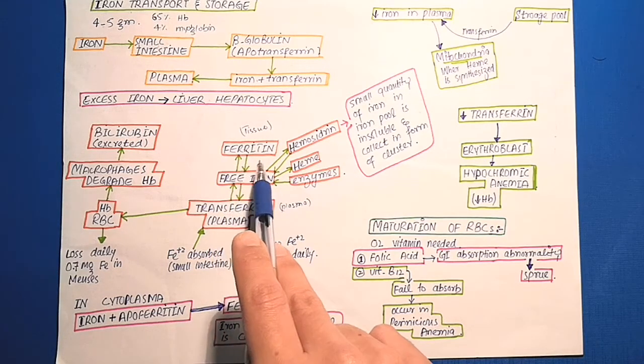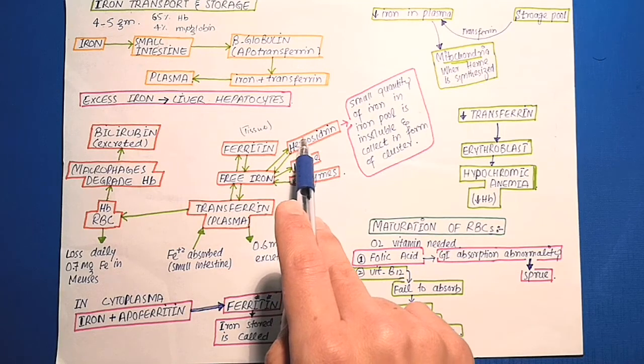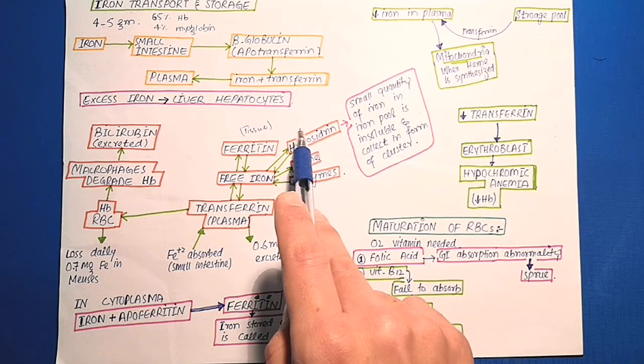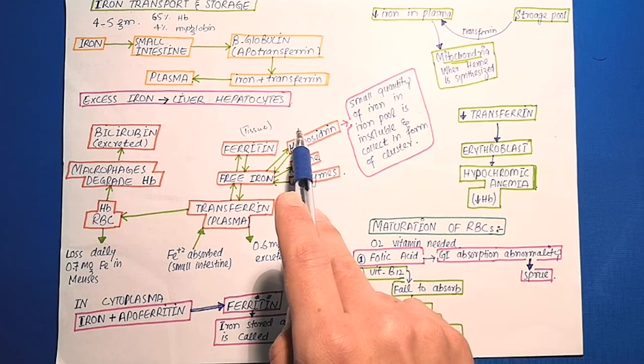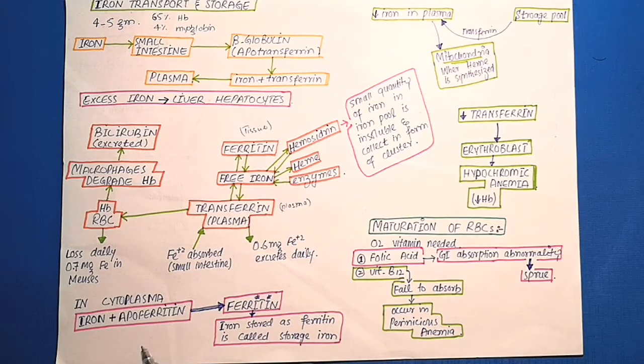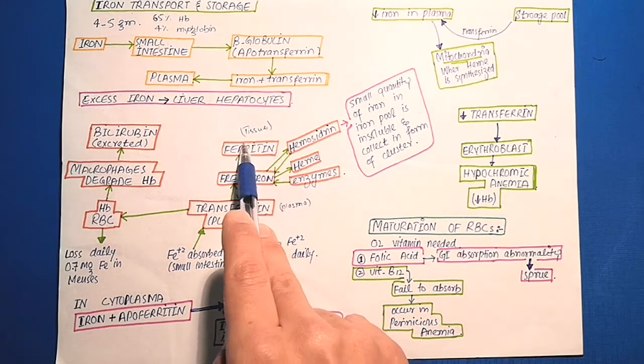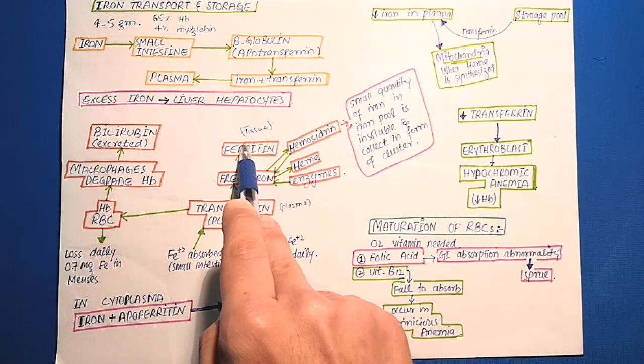In the storage pool, there is a large amount of iron which is in an extremely insoluble form. It is called hemosiderin. This hemosiderin collects in the cells in form of large clusters and can be observed with the microscope as large particles. And in contrast, the ferritin are small particles and can only be seen with the electron microscope.